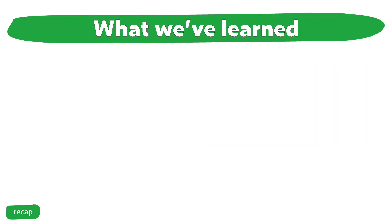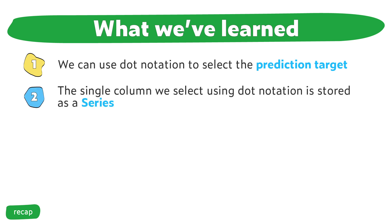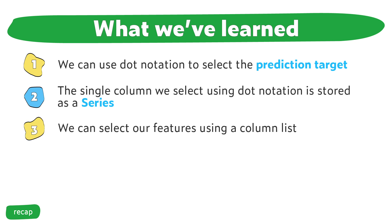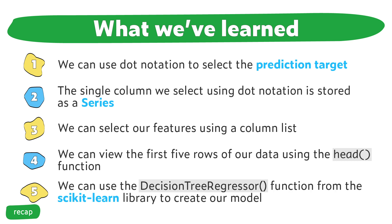Between what you've read on the Kaggle Intro to Machine Learning course for the Your First ML Model section and what we've covered in this video, here are five main points: one, we can use dot notation to select the prediction target; two, the single column selected using dot notation is stored as a series; three, we can select our features using a column list; four, we can review the first five rows using the head function; and five, we can use the decision tree regressor from scikit-learn to create our model.